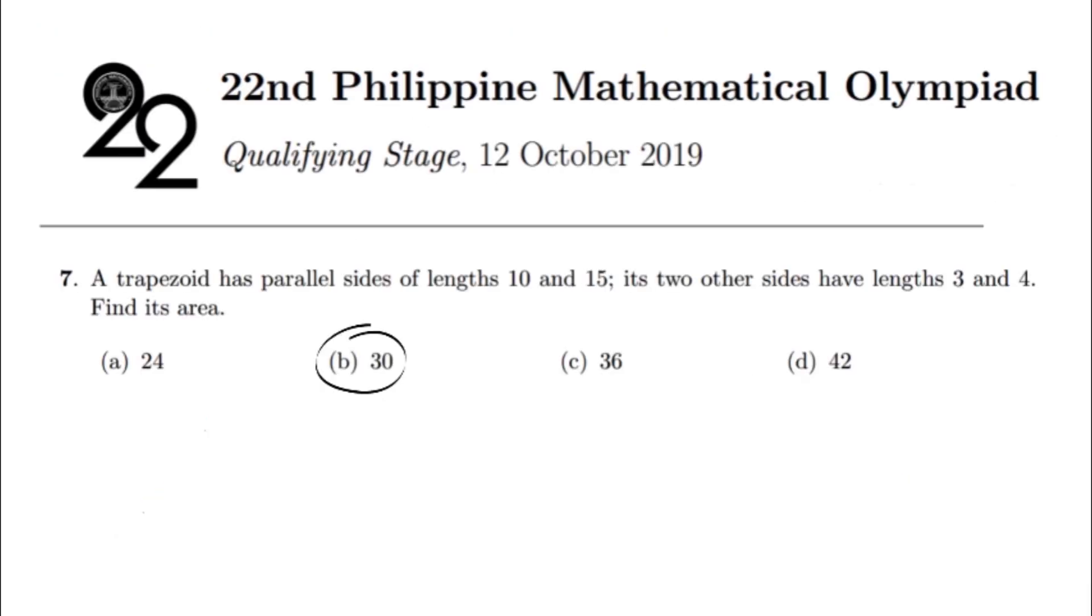So all in all, the answer to this problem, number 7, would be letter B. I hope you guys learned something, a thing or two, from these approaches, and I hope you saw the beauty of geometry and how elegant it could be in most cases. I wish you happy reviewing for your PMO and have a good day. Thank you.